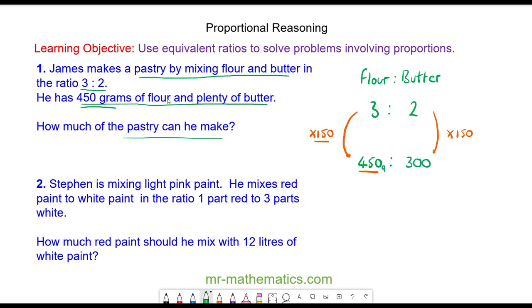So he adds 450 grams of flour and 300 grams of butter. In total he can make 750 grams of pastry.